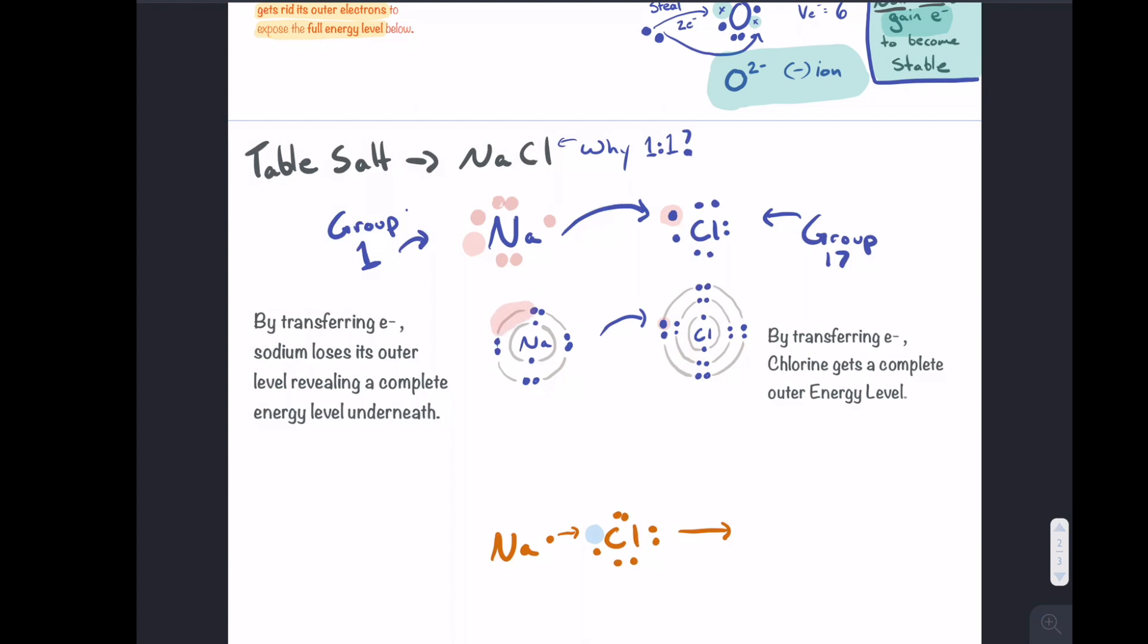Chlorine gets that extra electron and what happens to it? It gets the complete outer energy level. Both are feeling pretty good about this, but because we've lost or gained electrons, sodium, having lost an electron, becomes a positively charged ion. Chlorine, having gained an electron, becomes a negatively charged ion, because once again it gains those negative charges. Remember, it was an electron that was being transferred here. What happens when you have a positive next to a negative? Well, opposites attract in science, so the positive charge attracts it over and the two want to be closer together.